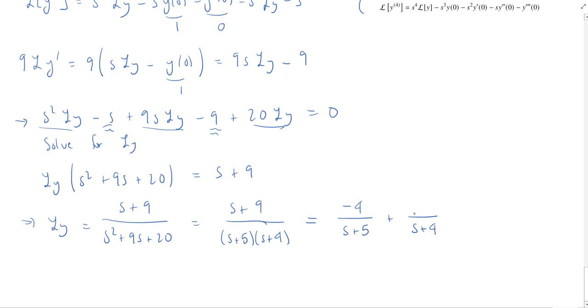Then to get this coefficient over s plus 4, I cover up the s plus 4 and make s equal to negative 4. So 9 minus 4 is 5. Negative 4 plus 5 is 1. 5 over 1 is 5. So now I have that the Laplace transform of y is given by this sum of fractions. This negative 4 and this 5, those are just coefficients.